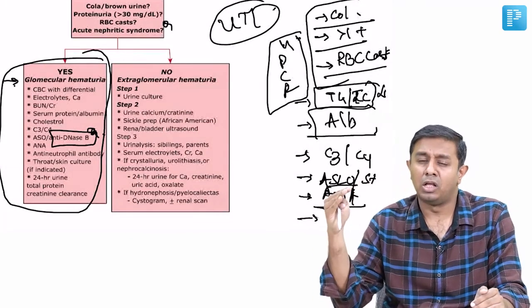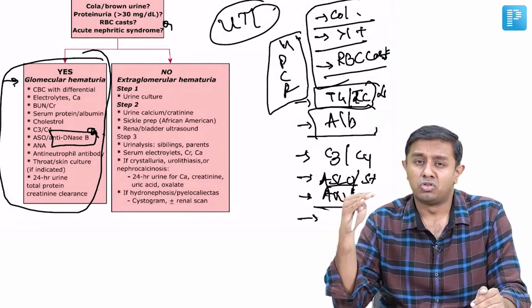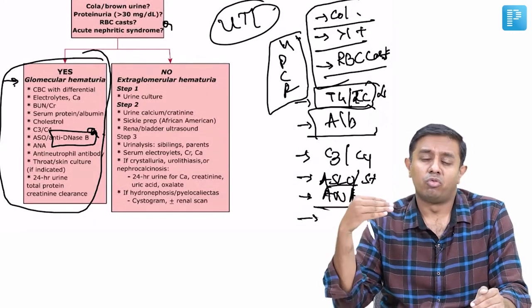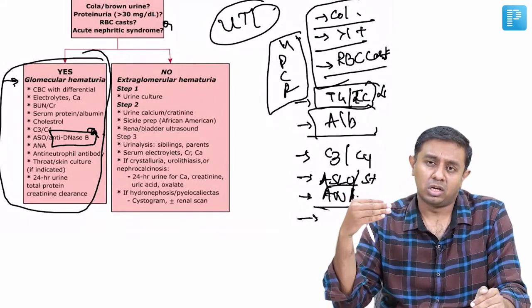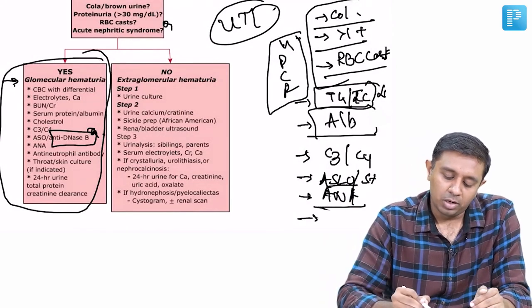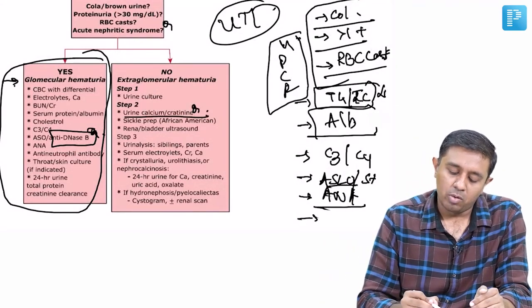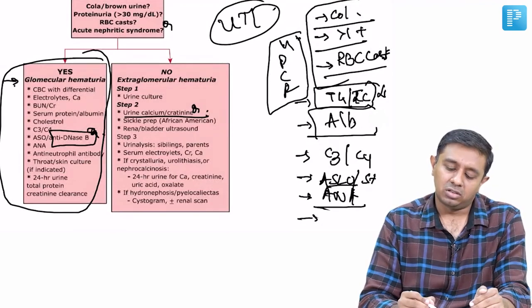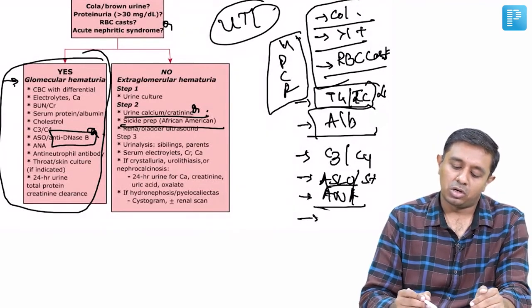If the cause is not apparent after ruling out trauma, after ruling about perineal irritation or meatal stenosis, we would like to go for stones evaluation. Calcium creatinine ratio becomes very important here - urinary calcium creatinine ratio. If we are talking about anemia in African population, sickle cell preparation can be one of the things.